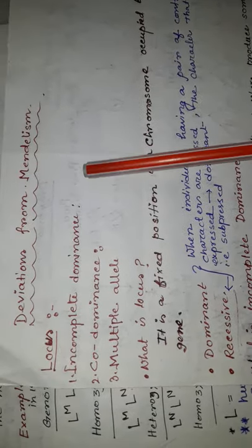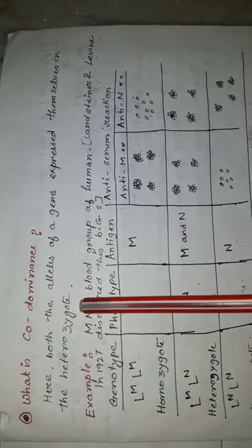Another deviation from Mendelism is codominance. What is codominance? Codominance is when both the alleles of a gene express themselves in the heterozygote. That is, during heterozygous condition, normally we find that the dominant character is expressed. But in case of codominance, both the alleles are expressed equally.